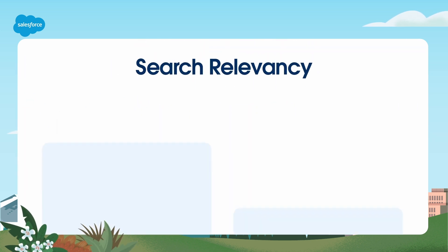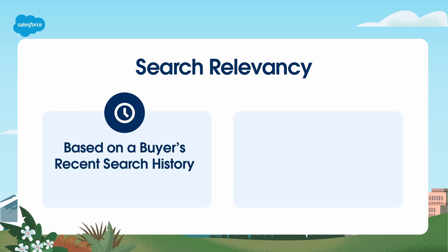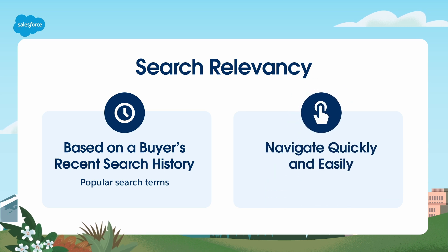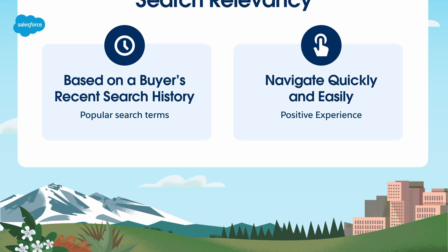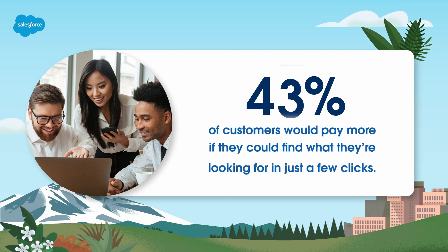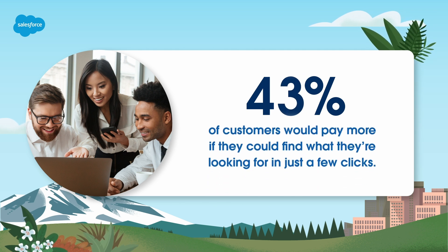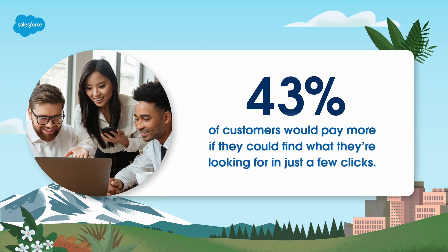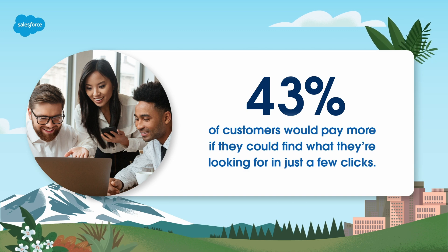Search relevancy is based on a buyer's recent search history and popular search terms. It allows buyers to navigate to your products quickly and easily and gives them a positive experience. Research shows that 43% of customers would pay more if they could find what they're looking for in just a few clicks. Now that we've covered a few B2B search basics, let's learn how to use automation and AI with search in B2B commerce.